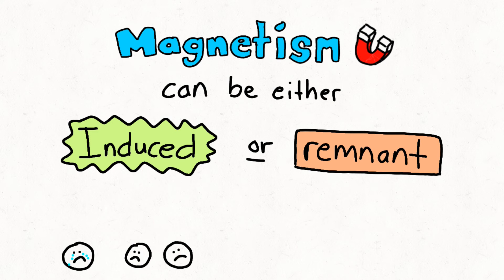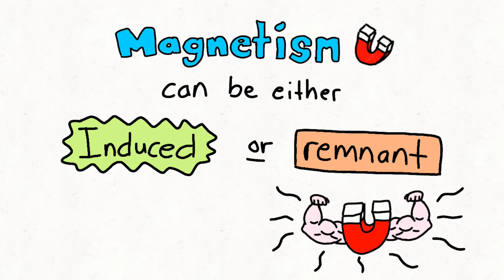Since a permanent magnet continuously exerts its own magnetic field, it is classified as a remnant magnet, as the magnetic field remains regardless of whether there is an external field applied or not.